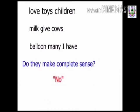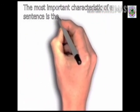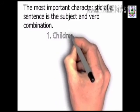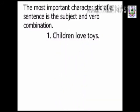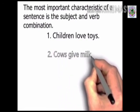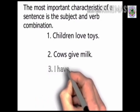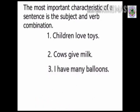The most important characteristic of a sentence is that subject and verb combination. जैसे पहला: 'Children love twice.' 'Cause give milk.' 'I have many balloons.' उनका पूरा पूरा अर्थ निकलता है.